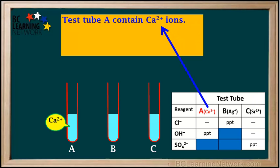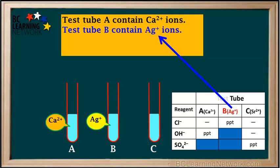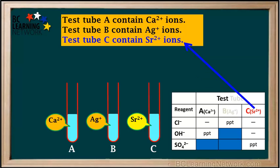To summarize the answer to our original question: test tube A contains calcium ions, test tube B contains silver ions, and test tube C contains strontium ions.